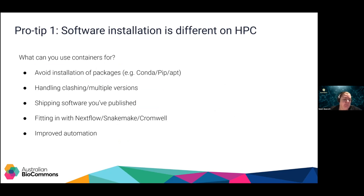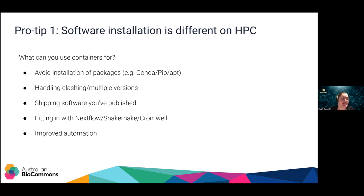Once you start using containers, you probably won't want to go back. Containers are great because you avoid having to do conda or pip or even apt-get installs, and they also handle clashing multiple versions. If you have software that only works with a specific version of R and particular dependencies that only coexisted for about six months in 2018 — that's going to be really difficult with a system-wide install or conda. But with a container, you can pull down all those specific versions and lock them in place permanently. There won't be an R update that breaks everything.